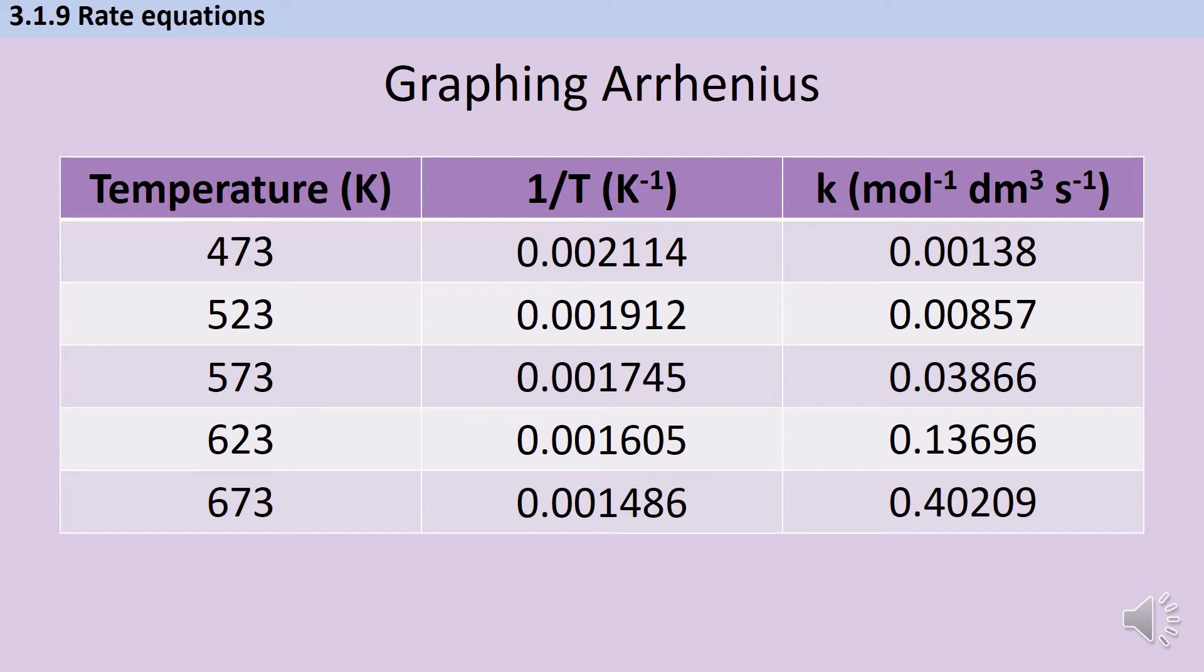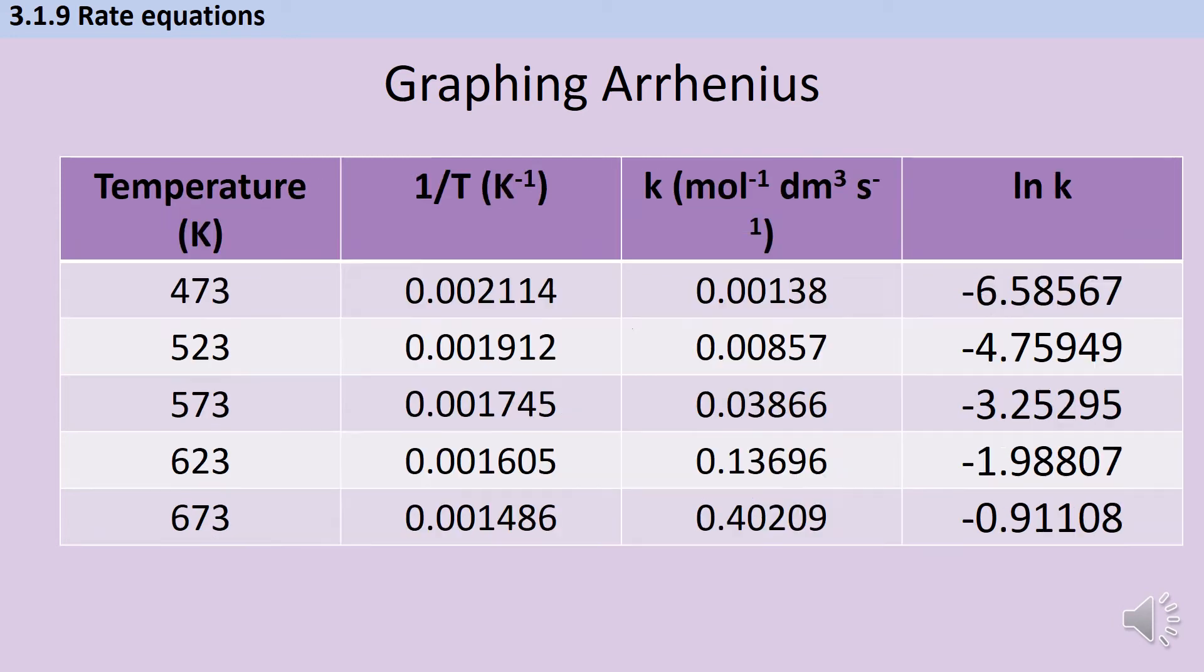Next, I need to take the natural log of k, and this is going to be the value that's going to go on my y-axis. Now what you'll notice is that all of those natural logs of k are negative numbers, and that's always going to be the case because all of our values of k are going to be numbers that fall between 1 and 0, and so we're going to expect negative answers when we take the natural log of those.